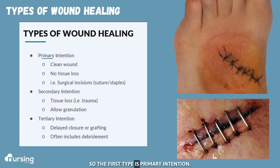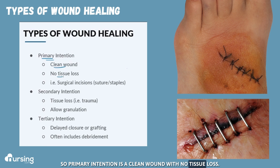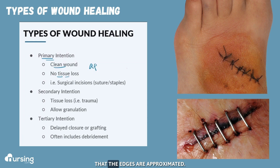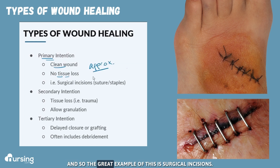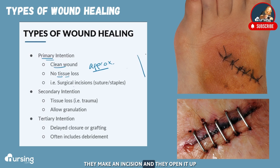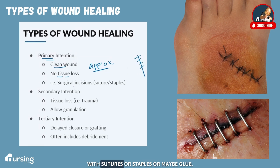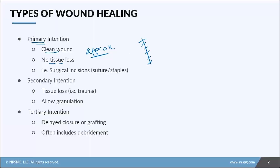The first type is primary intention. Primary intention is a clean wound with no tissue loss, and usually what you'll find is that the edges are approximated. A great example of this is surgical incisions — they make an incision, open it up, and then simply bring it back together with sutures, staples, or maybe glue.